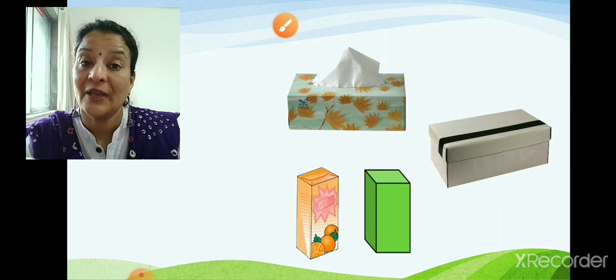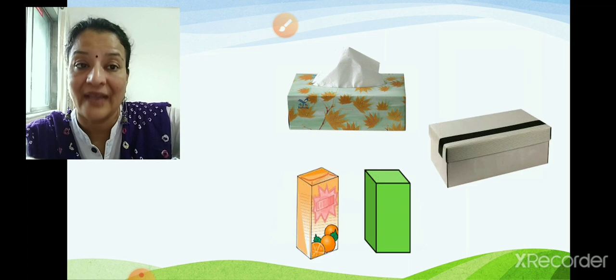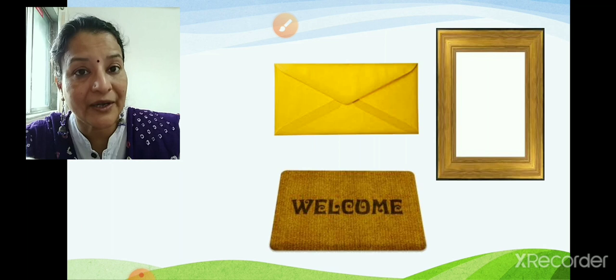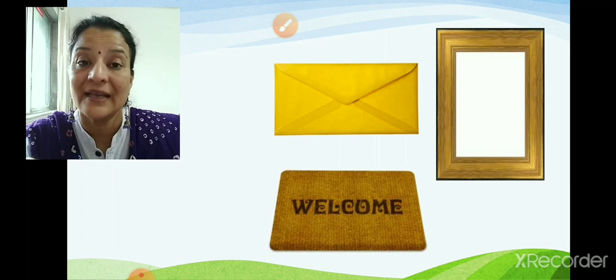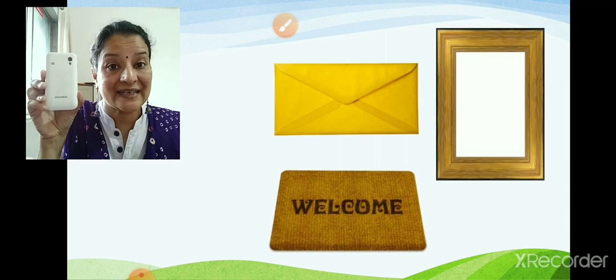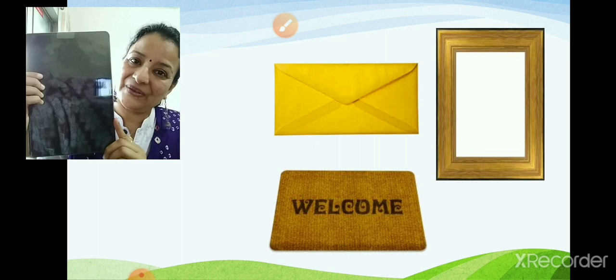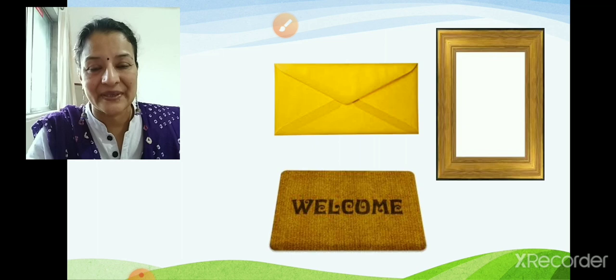For example, your tissue box, your shoe box, your juice box are all examples of rectangle. And your envelope, photo frame, a door or a doormat are all examples of rectangle. Like I already told you, your book is rectangular. Your mobile is also rectangular in shape. Your playing cards are rectangle in shape and your iPad is also rectangle in shape.